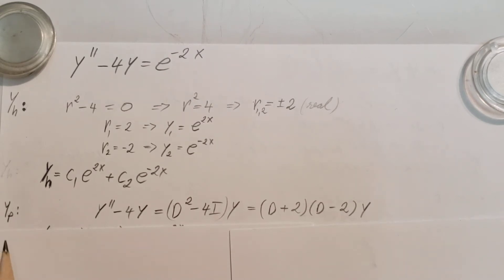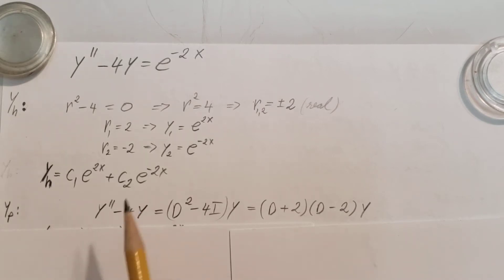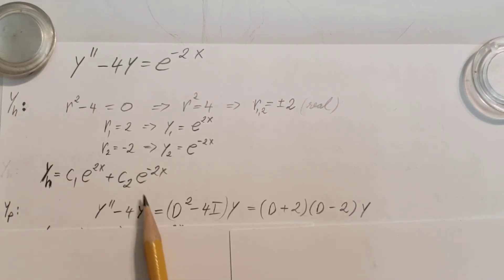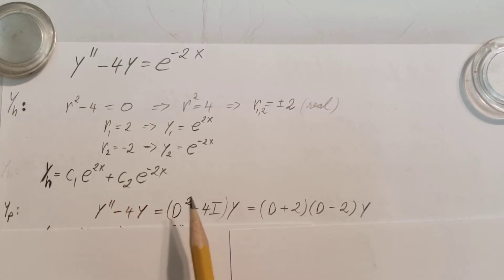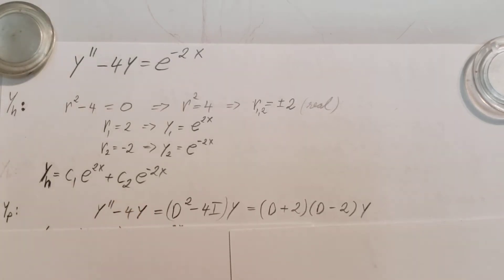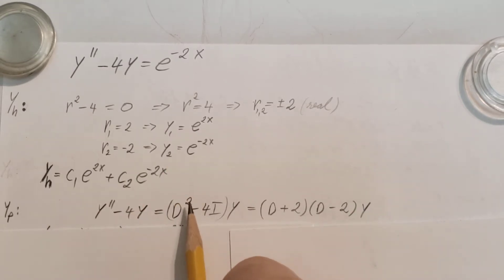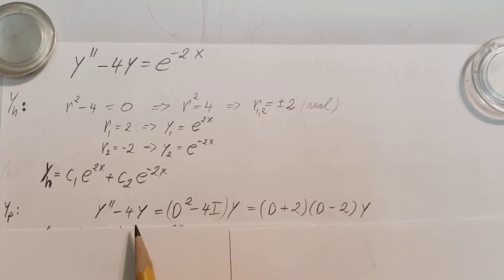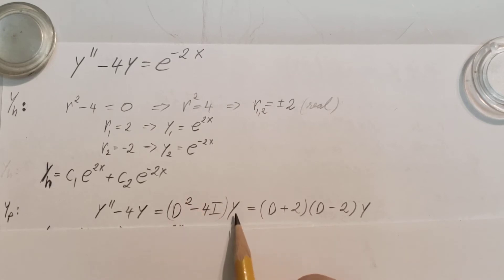So we're going to have to go ahead and find our yp, the particular solution. For this, I'm going to use the annihilator method. I'm going to take my function y double prime minus 4y and write it in operator form: D squared for the y double prime, minus 4 times the identity operator I, for the y. The y comes at the end.